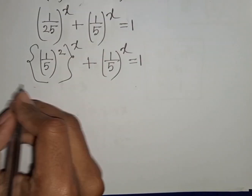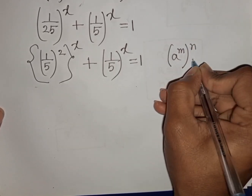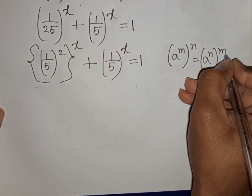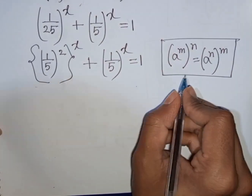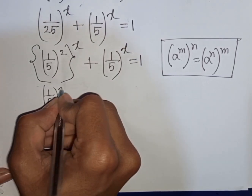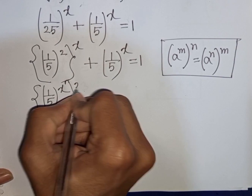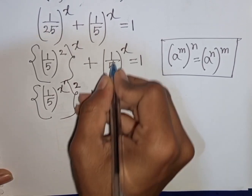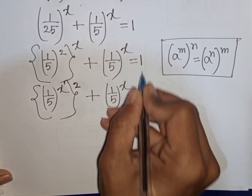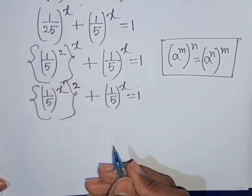Here we can apply the exponential rule that (a power m) bracket power n is equal to (a power n) bracket power m. So according to this rule, we can write (1 over 5) bracket power x, second bracket power 2, then plus (1 over 5) bracket power x is equal to 1. We see that (1 over 5) bracket power x appears in both terms — both terms are the same.